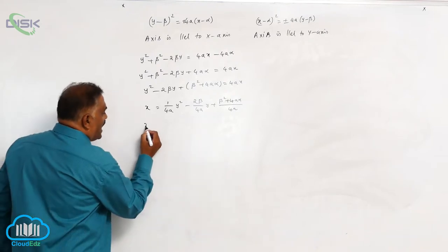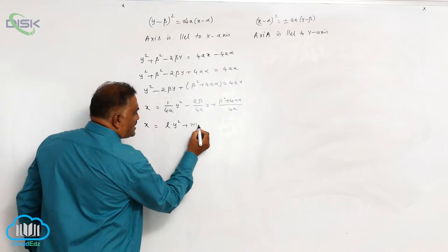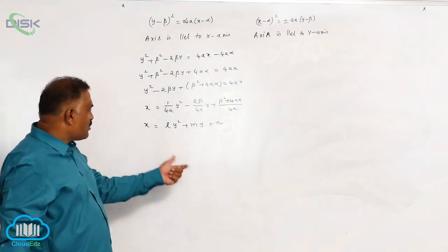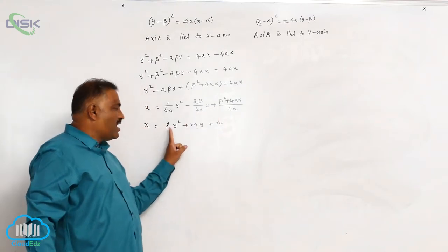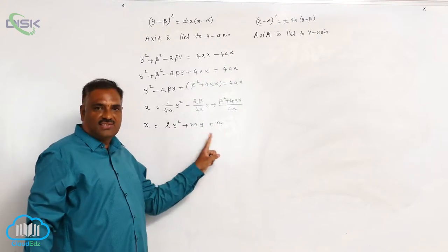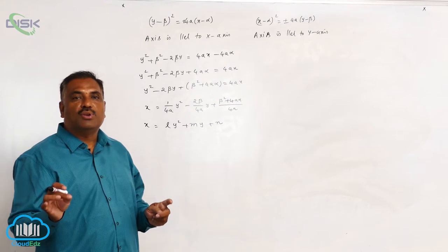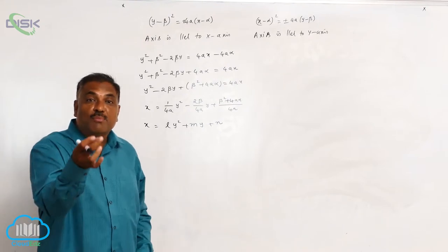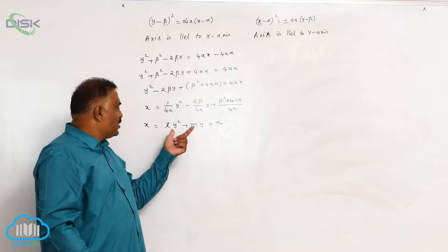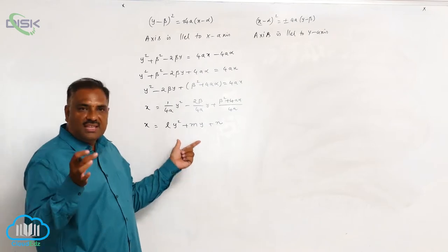So I can write it as x = ly² + my + n. You observe that there are 3 constants. That is why, in finding out a parabola with axis parallel to the x-axis, we require a minimum of 3 points or 3 conditions to find out this equation.